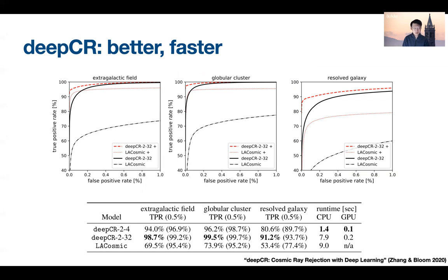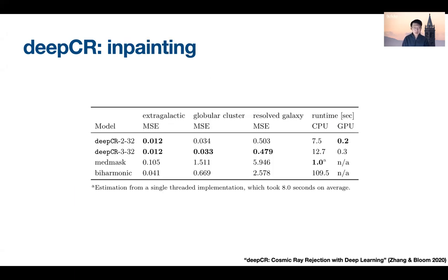There are also large improvements in speed. On GPU, DeepCR is at least orders of magnitude faster than LaCosmic — though admittedly there is no GPU implementation for LaCosmic. This makes it a really good solution for the next generation of larger-scale surveys such as Rubin Observatory, previously known as LSST, which has enormous numbers of images and requires a cosmic ray rejection algorithm that is highly scalable. With semantic features, we were also able to inpaint galaxies and structured objects much better than non-neural algorithms, and much faster.